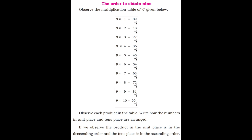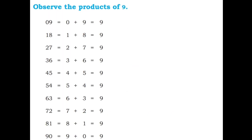Observe the product of 9: 9 ones are 9, 0 plus 9 is equal to 9. 9 twos are 18, 1 plus 8 is equal to 9. 9 threes are 27, 2 plus 7 is equal to 9. 9 fours are 36, 3 plus 6 is equal to 9. 4 plus 5 is equal to 9, 5 plus 4 is equal to 9, 6 plus 3 is equal to 9, 7 plus 2 is equal to 9, 8 plus 1 is equal to 9, and lastly 9 plus 0 is equal to 9. If we add all the digits of each product, we always get 9.